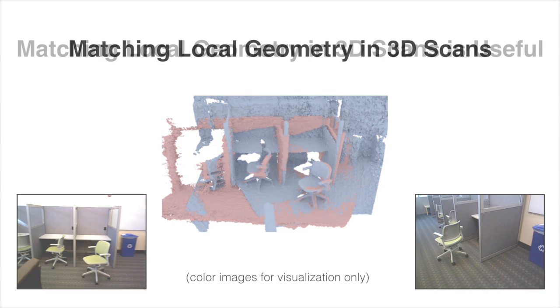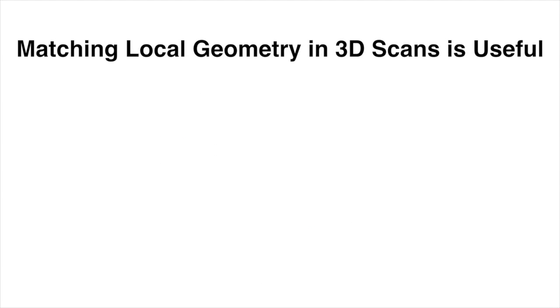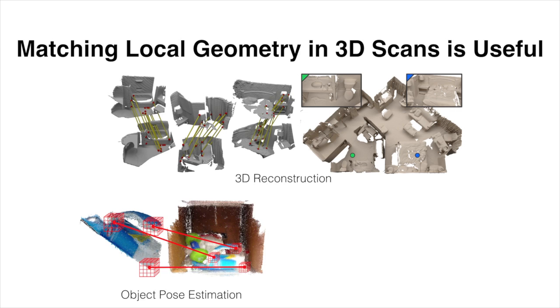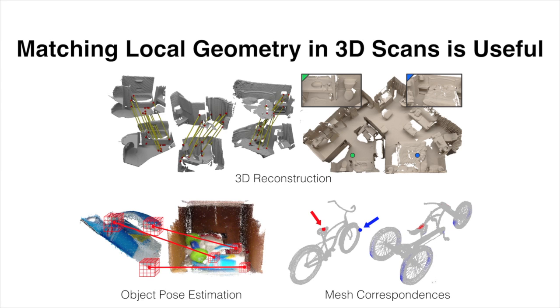Matching local 3D geometry is used in many applications, including scan alignment for 3D reconstructions, object pose estimation, and geometric mesh correspondences.